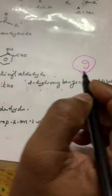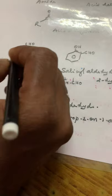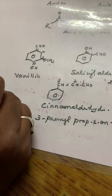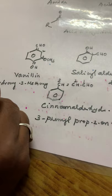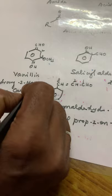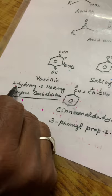For vanillin, numbering goes 1, 2, 3, 4. That is 4-hydroxy-3-methoxybenzene carbaldehyde. We write 4-hydroxy because whenever you are writing substituents, they must be written in alphabetical order. So: 4-hydroxy-3-methoxybenzene carbaldehyde.